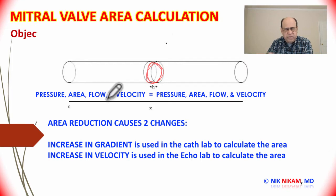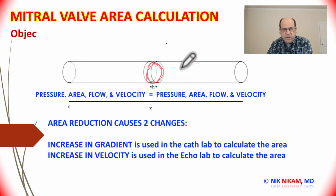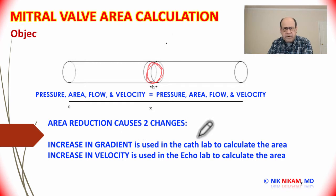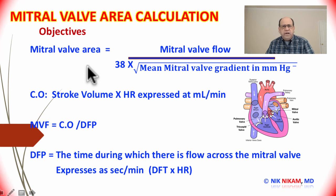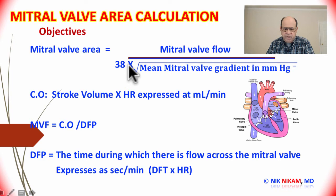In a real human situation where we are trying to calculate the area, we can use this principle of pressure gradient or velocity gradient across a narrowing to calculate the valve area. In the cardiac catheterization lab, we use the pressure gradient, which can be easily measured using catheters in the left ventricular cavity and also in the left atrium, or indirectly by measuring the pulmonary capillary wedge pressure. The formula we use for calculating the mitral valve area is mitral valve flow divided by a constant of 38 multiplied by the square root of the pressure gradient across the mitral valve.